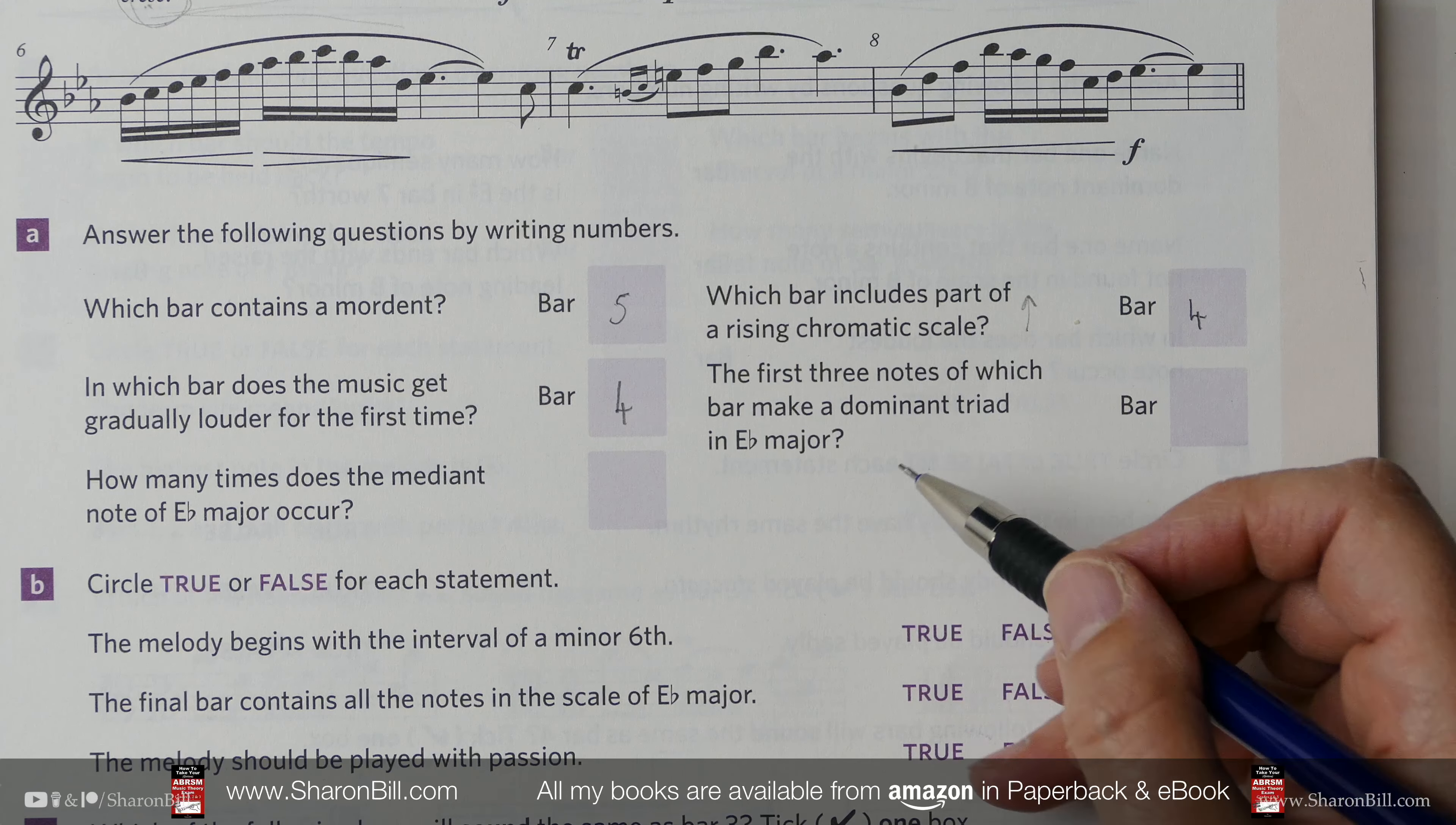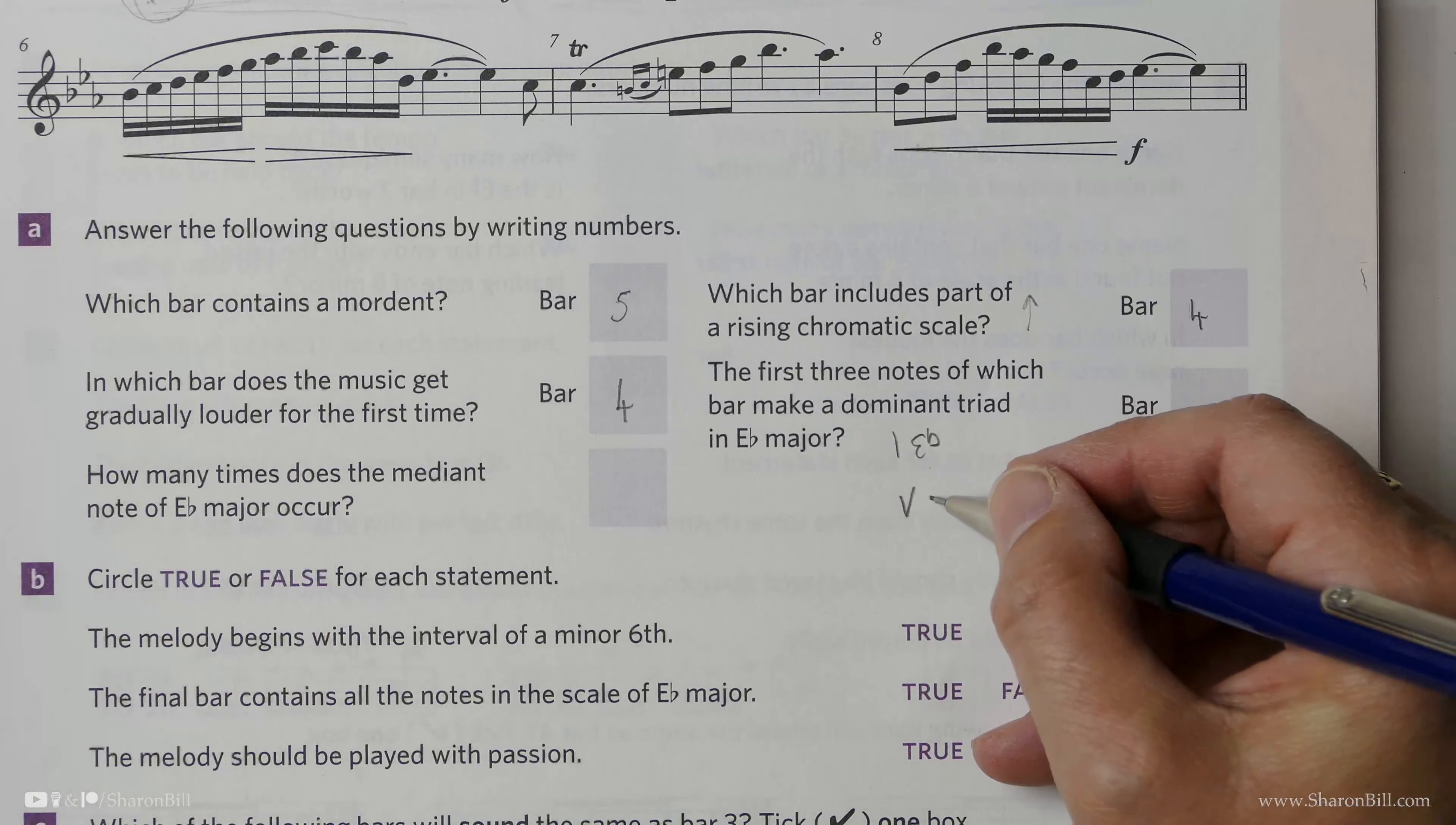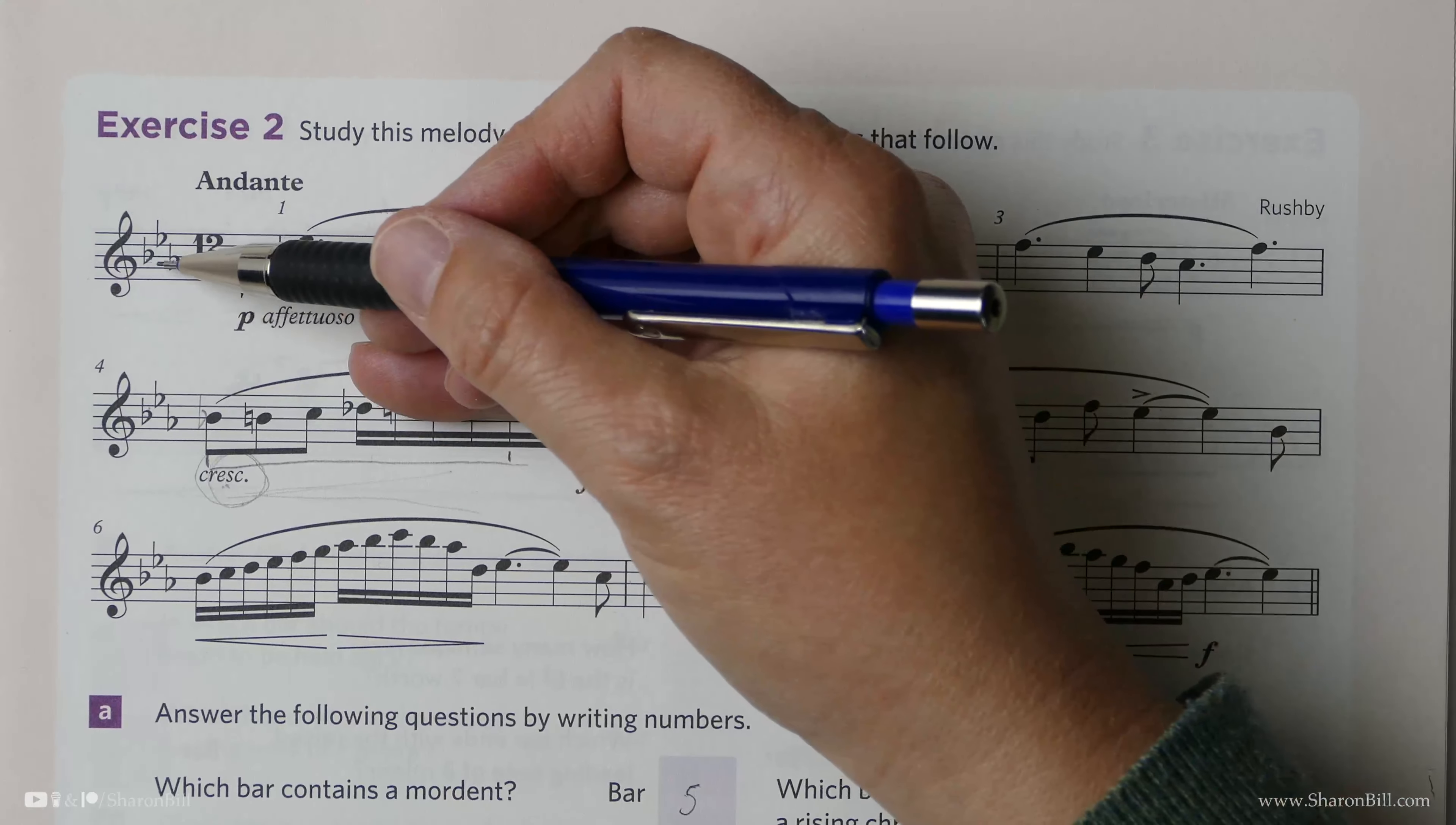Now here we're asked to find the first three notes which make the dominant triad in E-flat major. So chord I is built on E-flat. And chord V, if we count up V from E-flat: 1, 2, 3, 4, 5, takes us to B-flat. So we're looking for the chord built on B-flat. So build your triad from there. B-flat, D, F - 1st, 3rd, 5th. The B-flat will be shown in the key signature so we won't see it as an accidental. So we're just looking for notes B, D, and F. The B will be flattened.